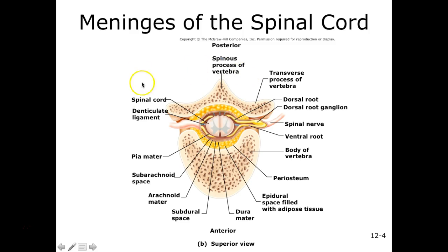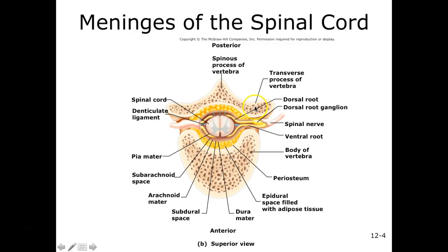This is a cross-section view of the spinal cord. Here's the body of our vertebrae toward the front of our body, and toward the back is the spine sticking out. In the middle is our spinal cord — remember gray matter is in the middle with all the cell bodies, and the surrounding white matter has myelinated axons. From there we have roots that extend out, and when these roots come together they make up your spinal nerve — those 31 pairs — and they exit the bony vertebrae.